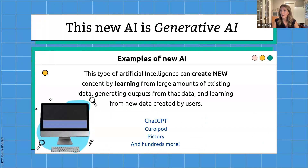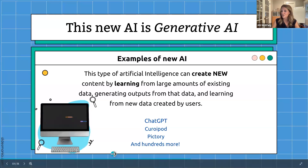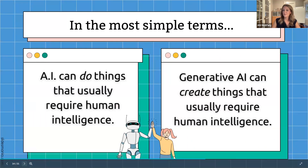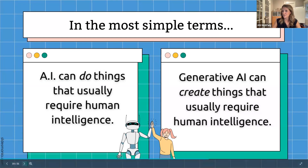This new type of AI that we're talking about is generative AI. This type of AI can create new content. It learns from a large amount of existing data that's been on the web since September 2021, and it can generate outputs from that data and then learn from the new data it's created. That includes things like ChatGPT, CuriePod, Pictory, and there are literally hundreds more generative AI tools. In the most simple terms: AI can do things that usually require human intelligence; generative AI can create things that usually require human intelligence — a little bit of a distinction there.